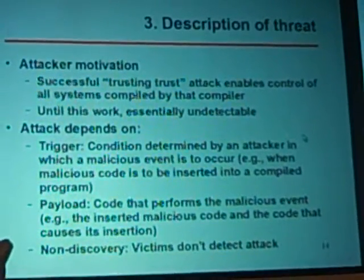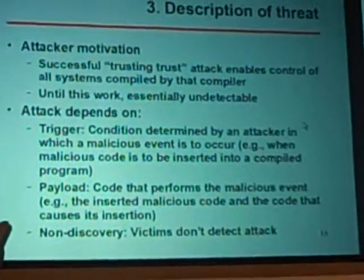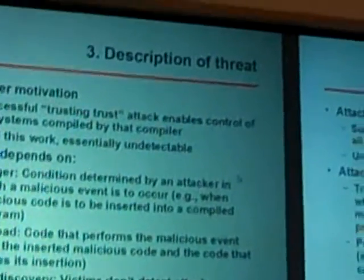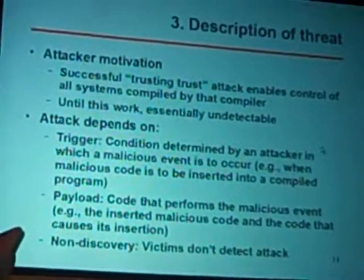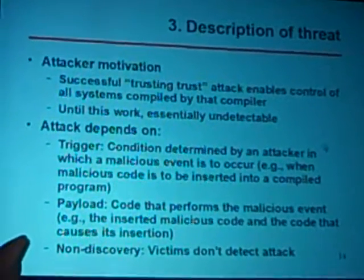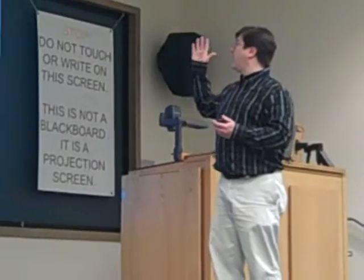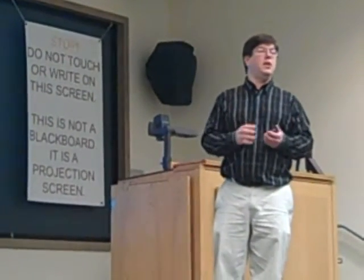Three terms are important in the trusting-trust attack: triggers, payloads, and non-discovery. A trigger is a condition chosen by the attacker upon which the malicious event is triggered. The payload is what happens when the trigger occurs. Non-discovery is crucial — the victim must not know that their compiler has been subverted. If the victim detects the subversion, they can use a different compiler or different approaches. The whole game depends on this inability to be certain whether you've discovered it.